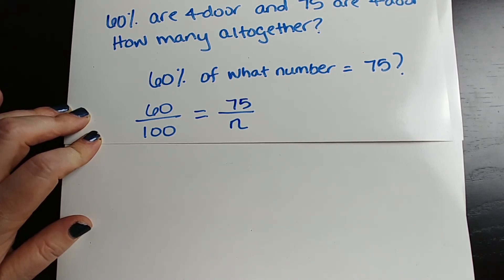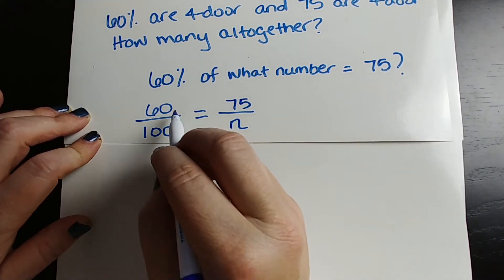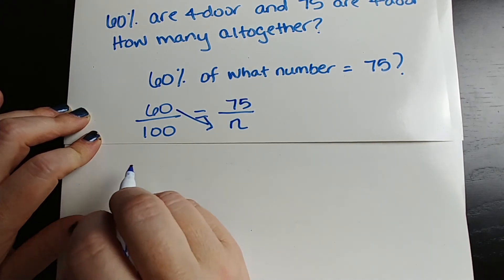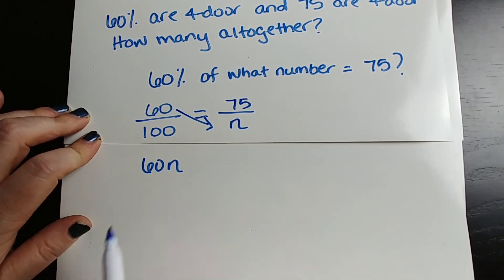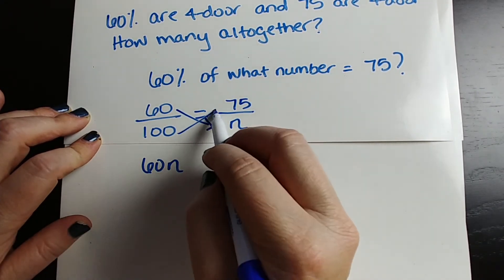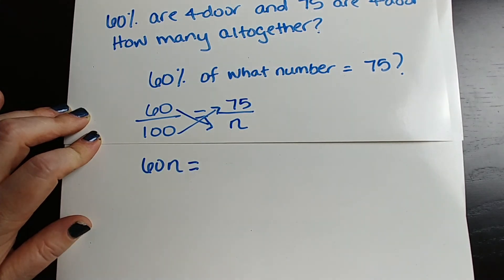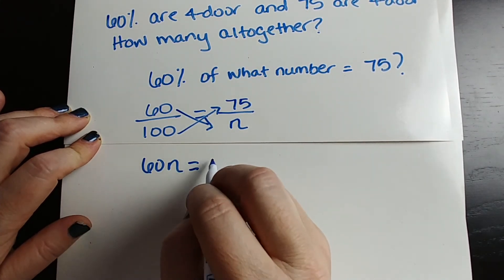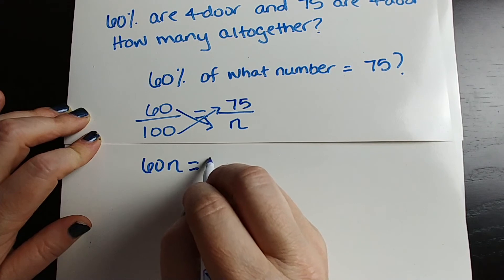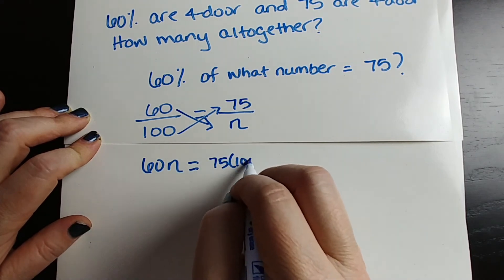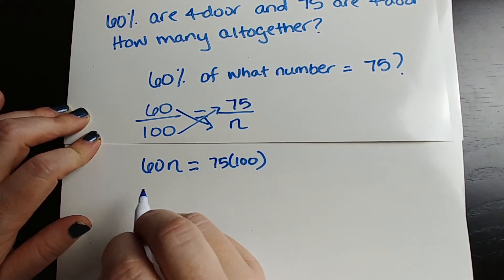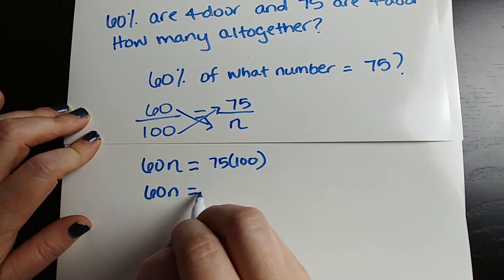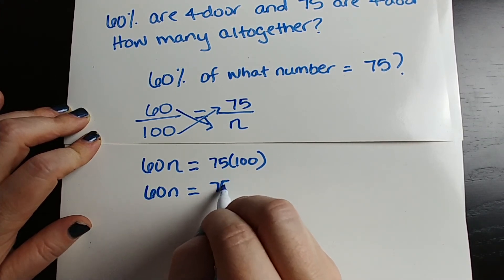So we're going to cross multiply: 60 times n, written as 60n, equals 100 times 75, which is 7,500. So 60n equals 7,500.